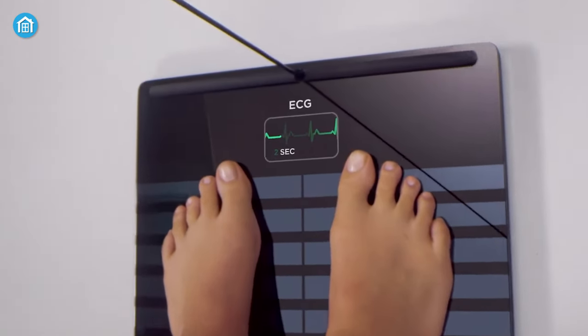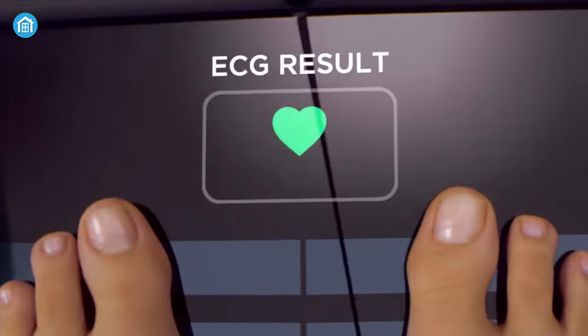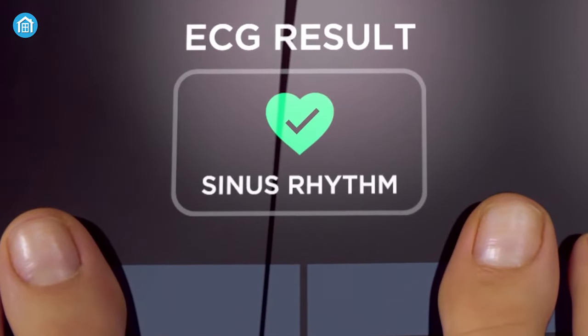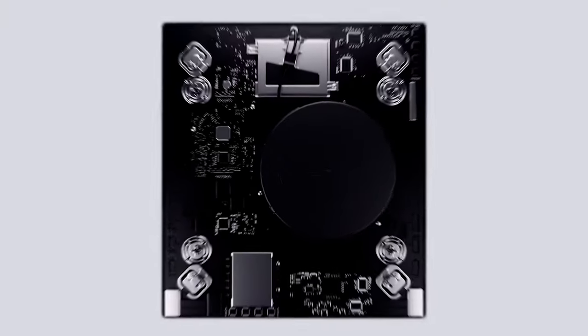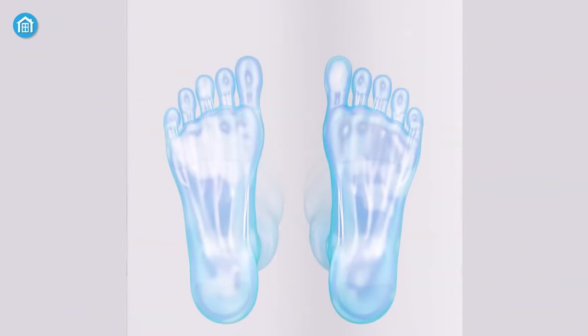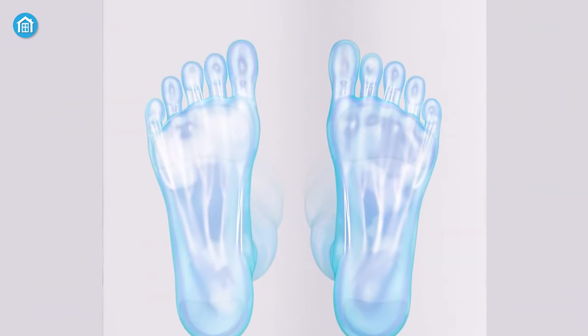Moreover, it might even provide you with a neuropathy score. All of this is controlled by a bar that rises from the scale. This bar uses electrodes to send low-voltage electrical currents through the body and assesses tissue resistance to the current.